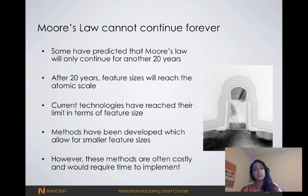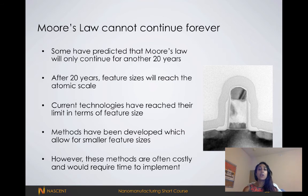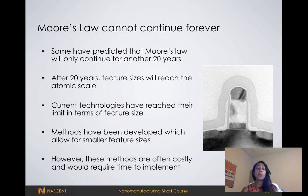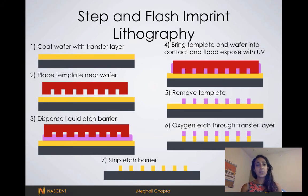Moore's Law cannot continue forever. Many have predicted that it will end pretty soon, and Intel just announced last year that they've essentially reached their limits with Moore's Law. This means that people no longer think we can achieve this goal of doubling transistors every two years. There are alternatives to lithography techniques; however, these methods are very costly and would require time to implement. Bottom-up approaches, while showing a lot of promise, are very underdeveloped. Another alternative was pioneered by Dr. S.V. Srinivasan and Dr. Grant Wilson — this technique is called step-flash imprint lithography.